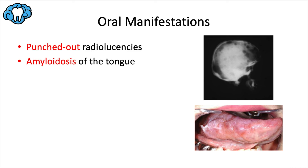Some oral manifestations: The key finding you need to know is multiple punched-out radiolucent lesions. They can also present as mottled areas on dental radiographs representing areas of bone tumor. These osteolytic lesions are more common in the cranium, visible on a cephalometric x-ray, or in the posterior mandible, visible on a panoramic x-ray. Amyloidosis of the tongue refers to the accumulation of amyloid, an abnormal protein that in multiple myeloma deposits in various organs including the tongue, leading to its enlargement. If the patient is undergoing chemotherapy or radiation, oral manifestations like oral mucositis would apply as well.